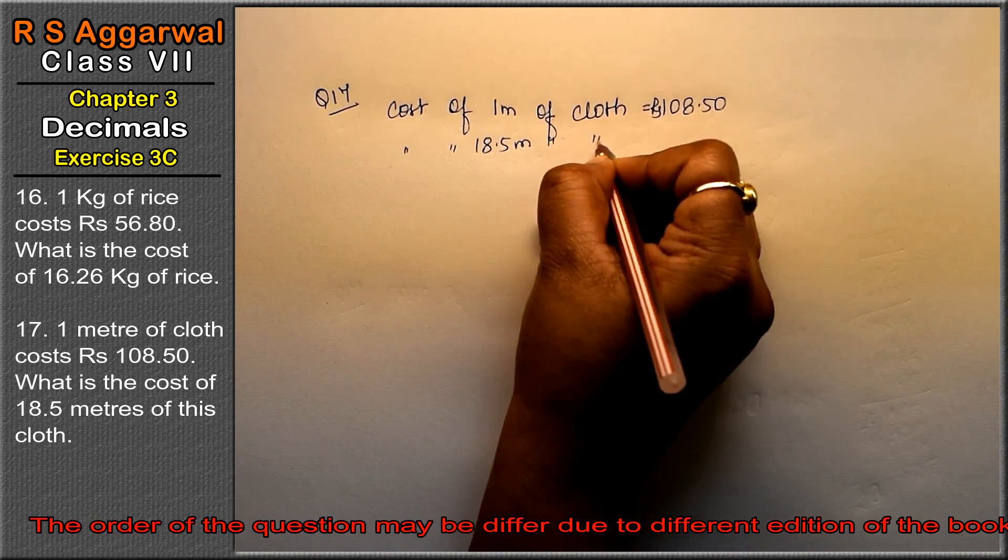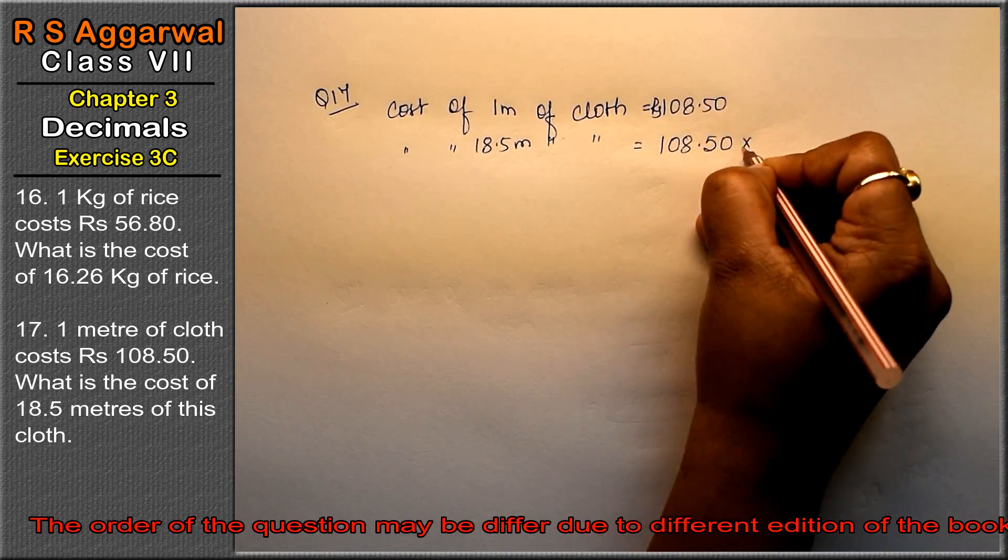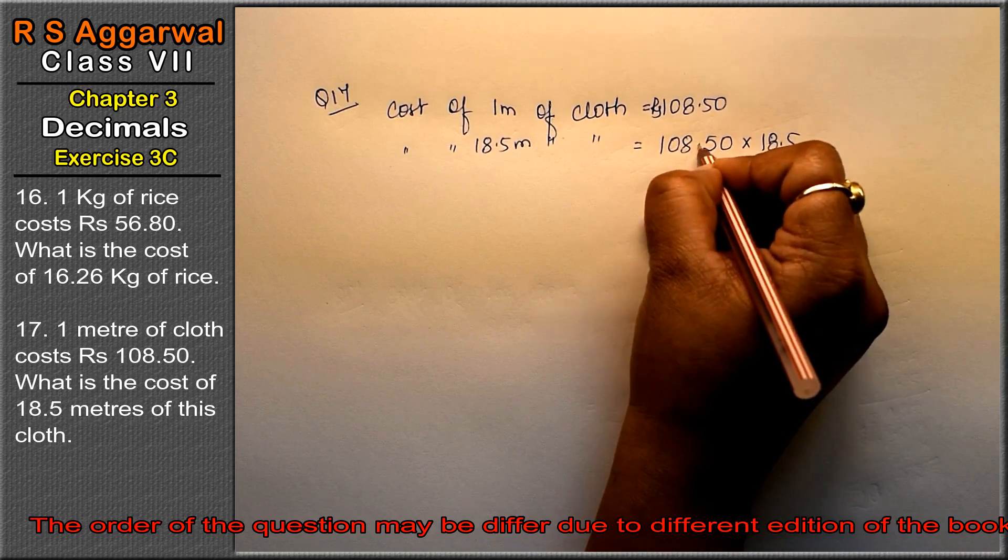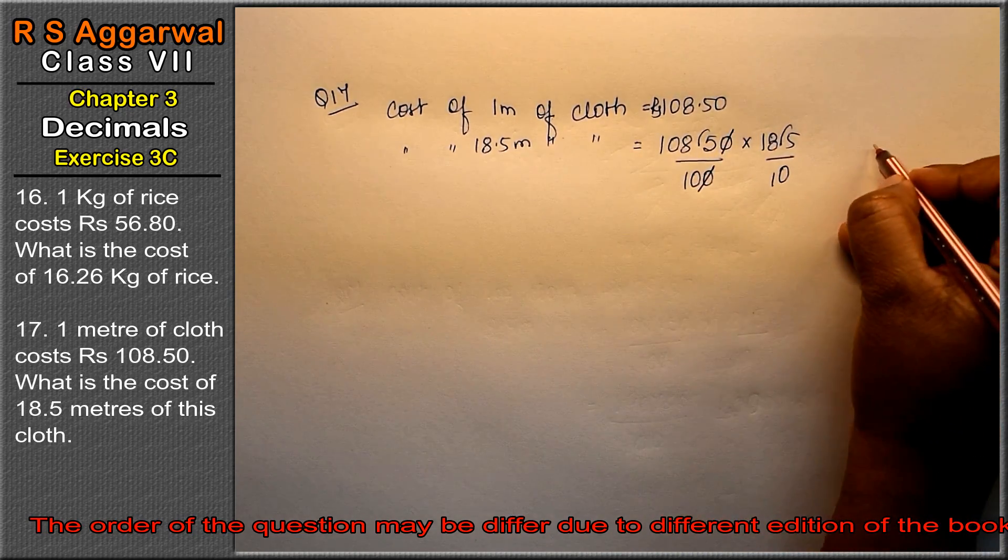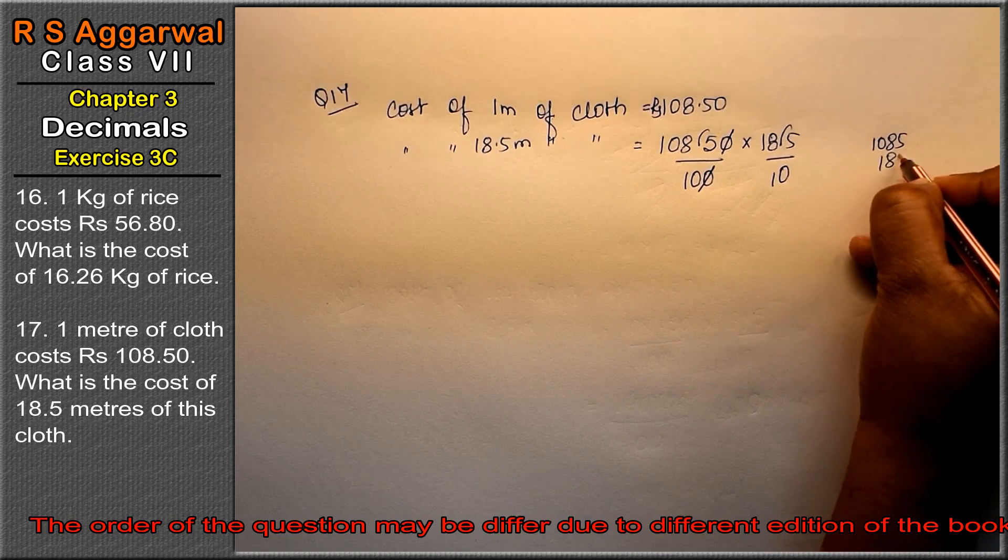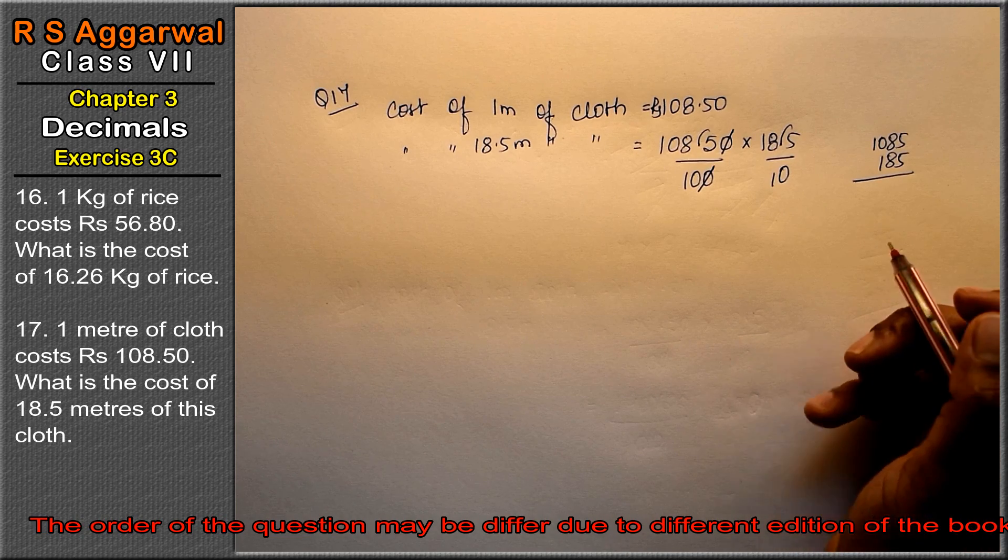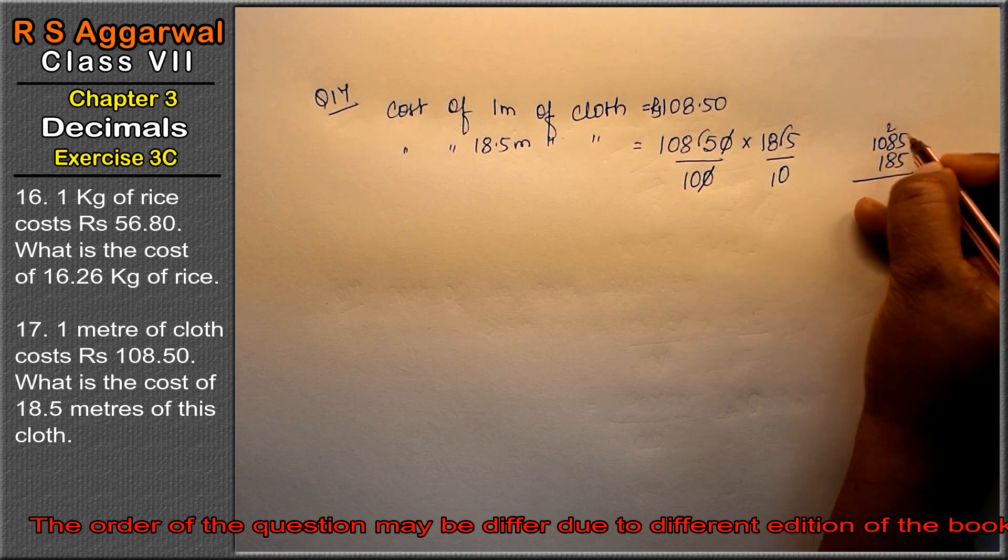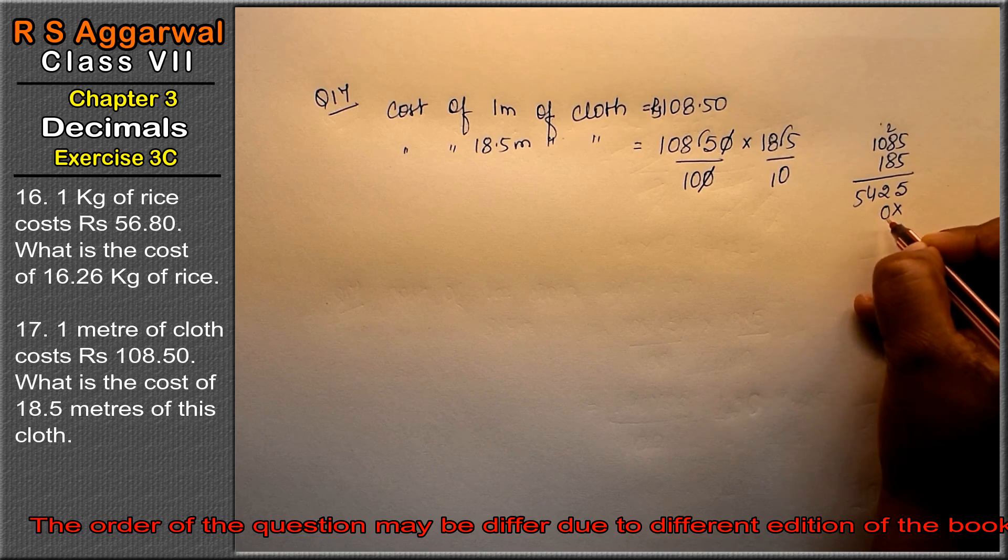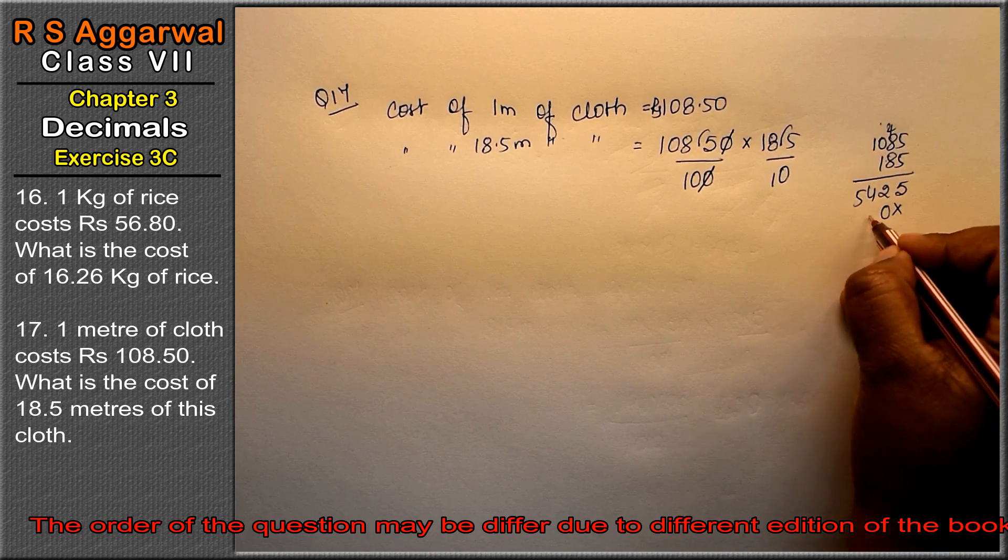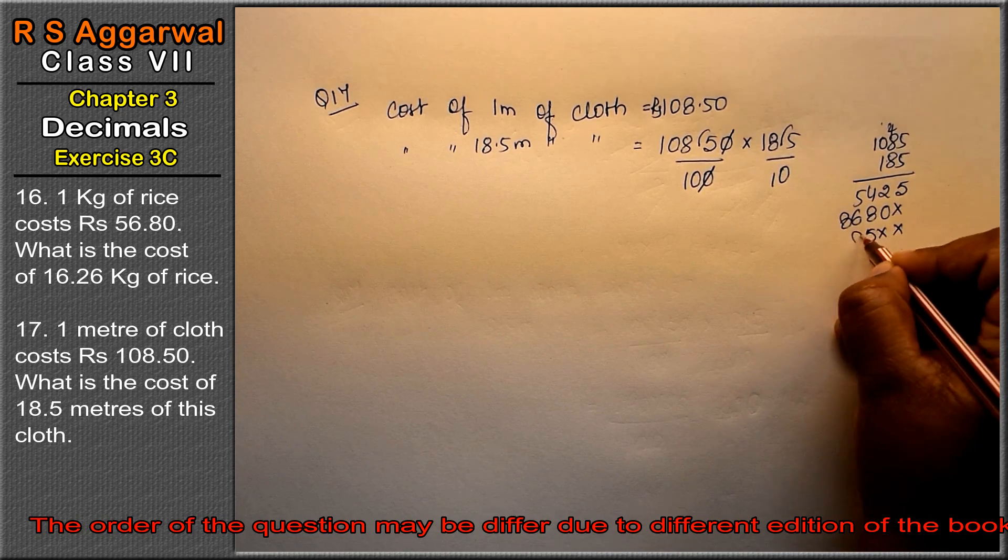The cost of 1 meter of cloth is 108.50 rupees. We need to find the cost of 18.5 meters. So we are going to multiply: 108.50 into 18.5. Point removed, one zero cancelled. Now 1085 into 185: 5 fives are 25, carry 2. 5 eights are 40, 42. 5 tens are 50, plus 4 is 54. 8 fives are 40, carry 4. 64, 68, and 8 ones are 8.